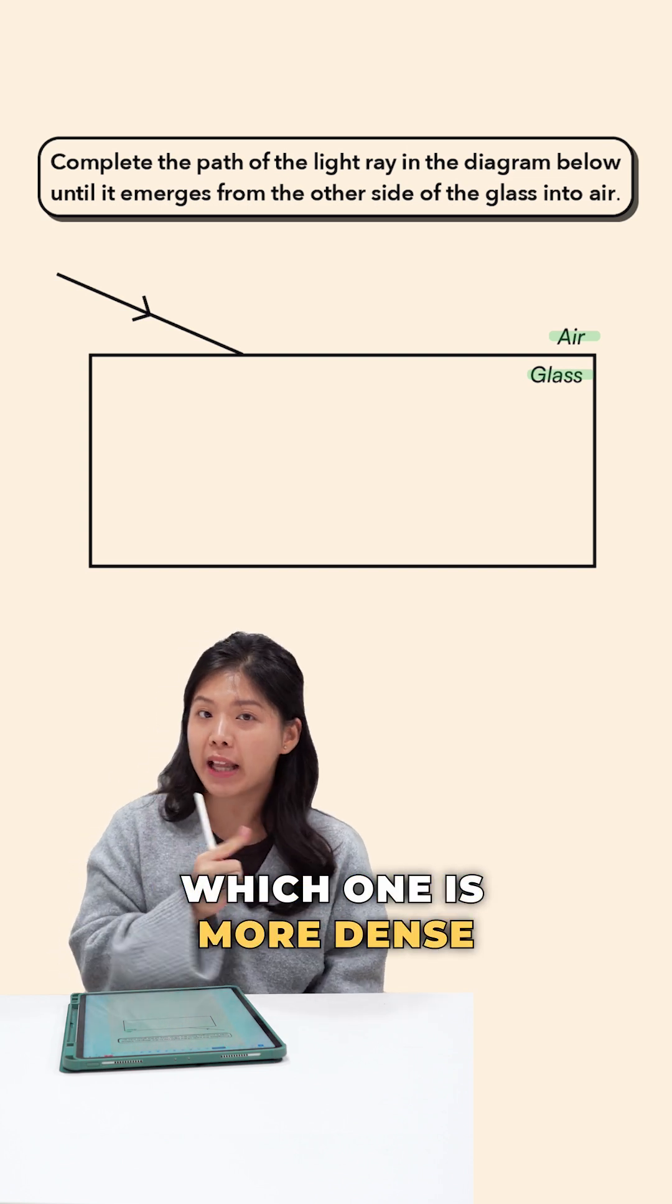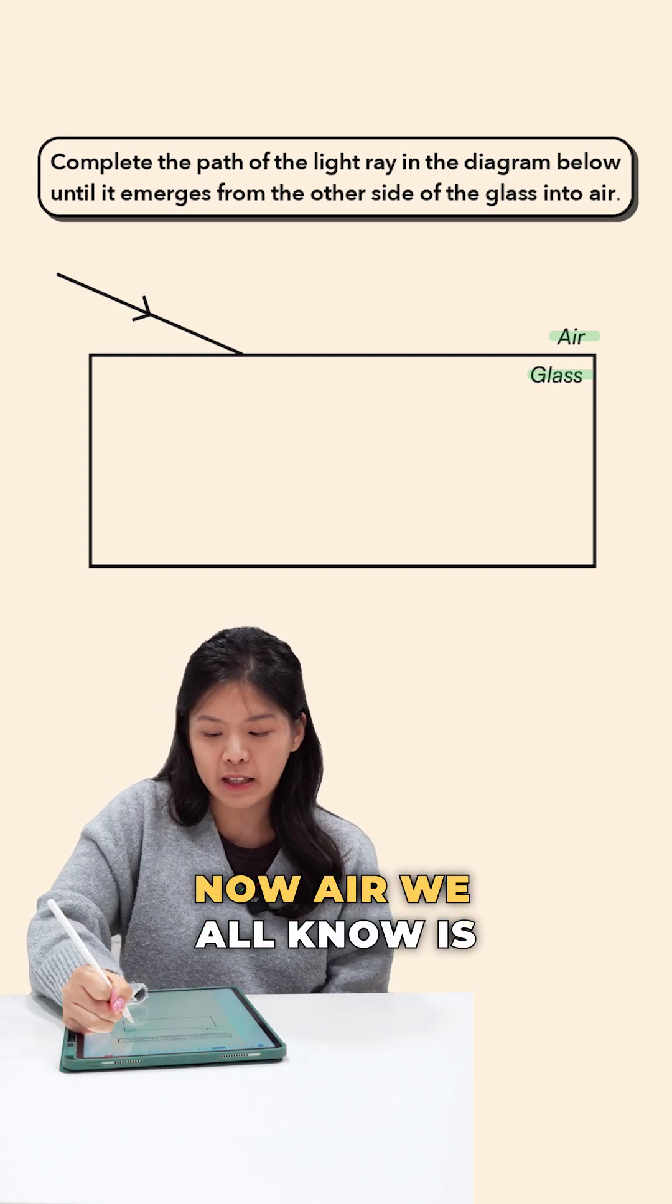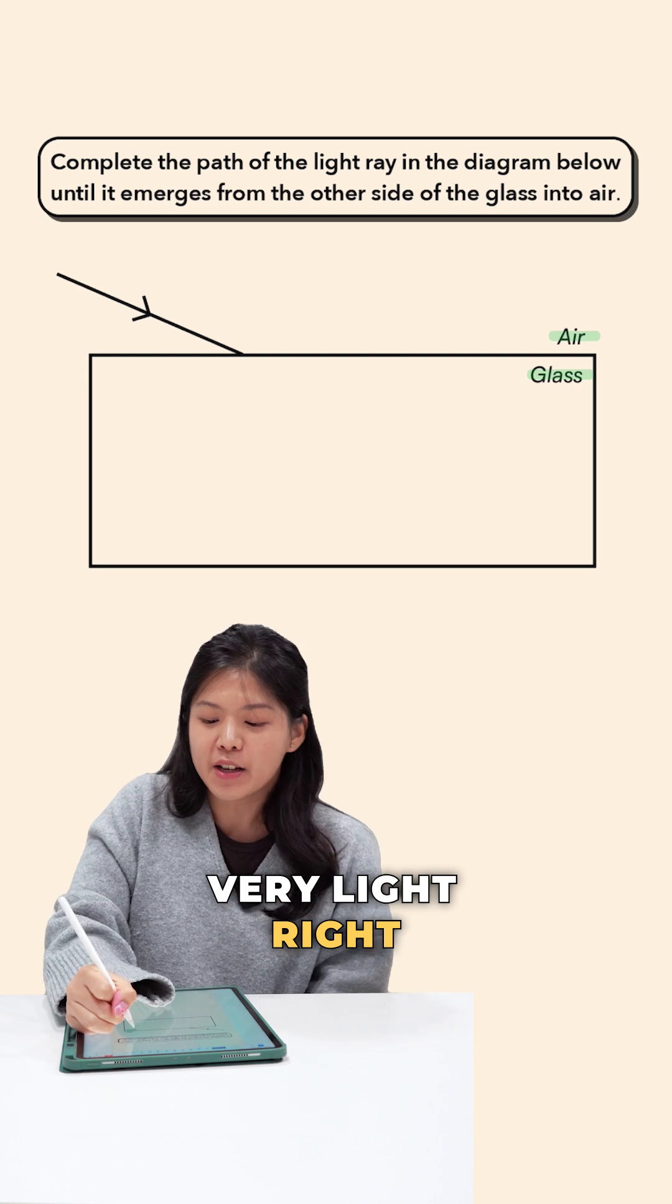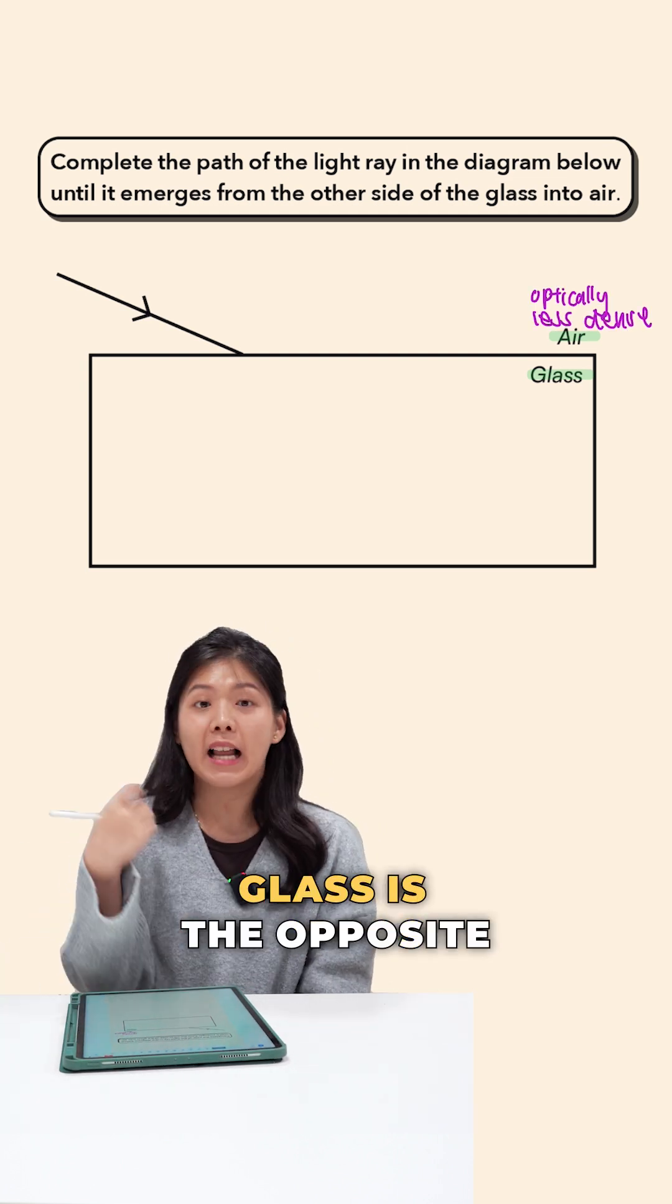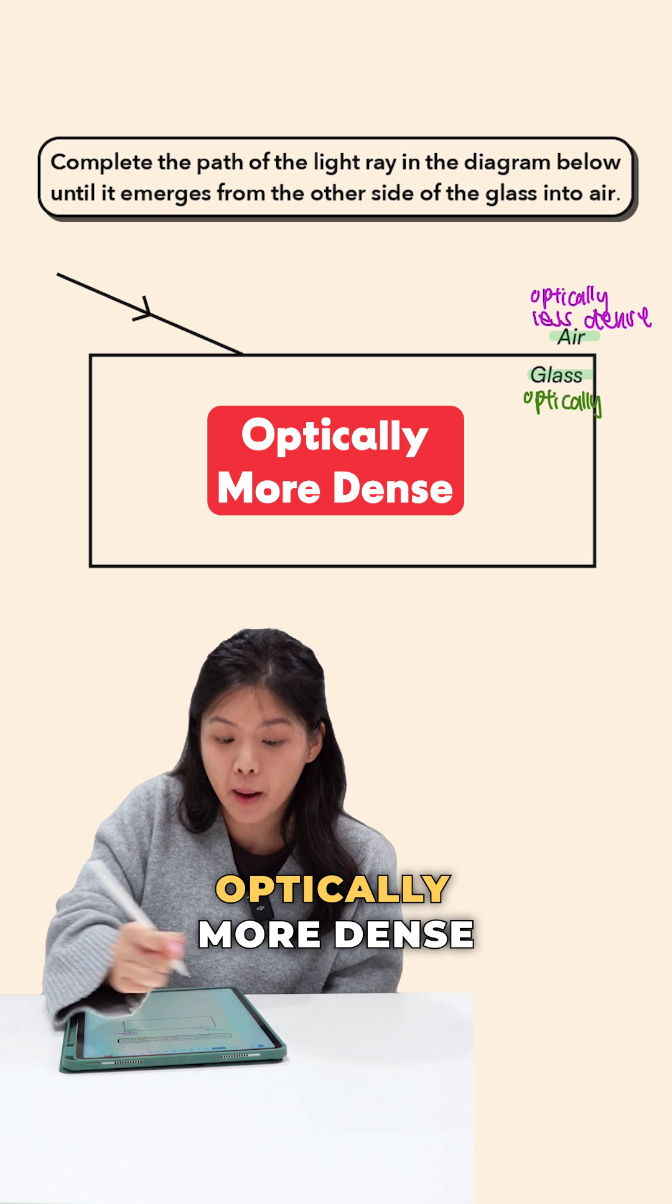So let's identify which one is more dense and which one is less dense. Air we all know is very light, right? So this is optically less dense. What about glass? Glass is the opposite, we say that it's optically more dense.